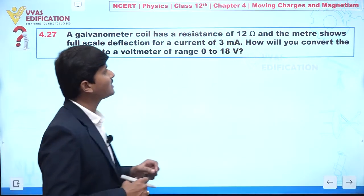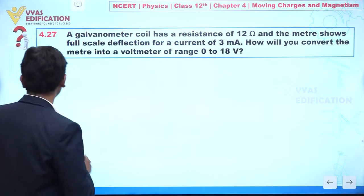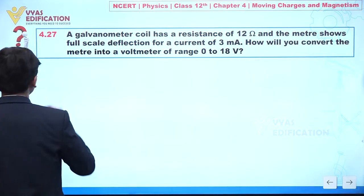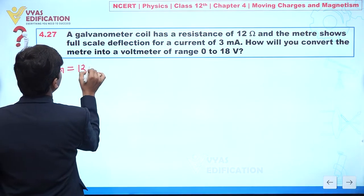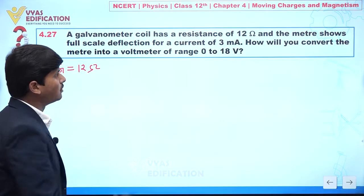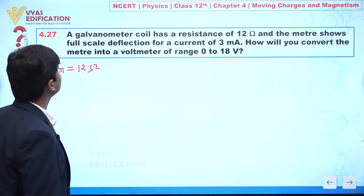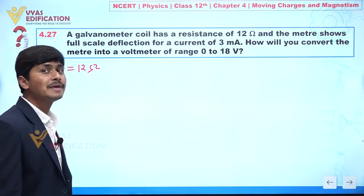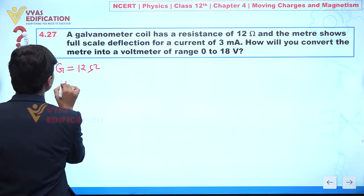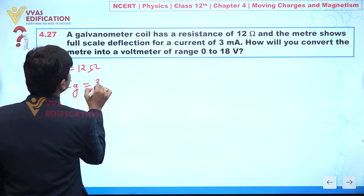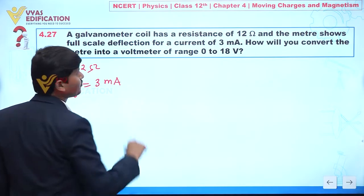The value of capital G is given as 12 ohm. The meter shows full scale deflection for a current of 3 milliampere, so the value of Ig is given as 3 milliampere.